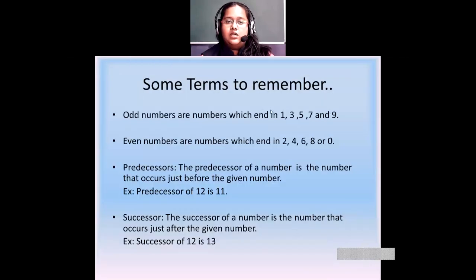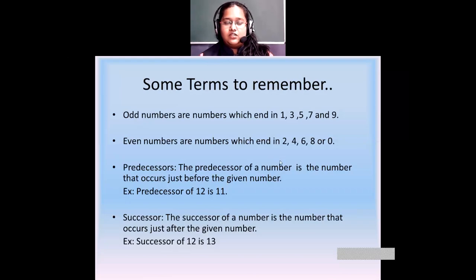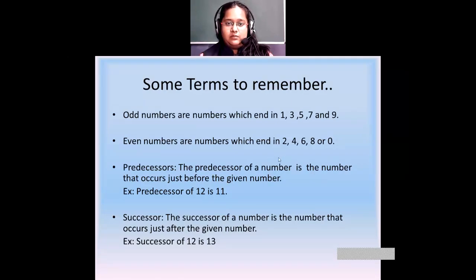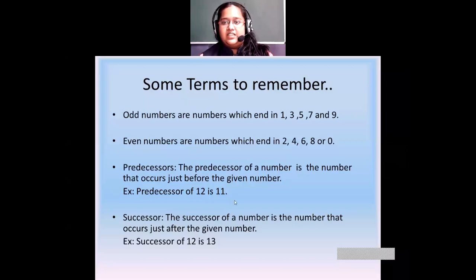Then we saw some terms. Odd numbers are numbers which end with 1, 3, 5, 7, or 9. Even numbers are numbers which end in 2, 4, 6, 8, or 0. Examples of odd numbers are 13, 27, 79, 57, and 21. Even numbers include 12, 24, 36, 58, 70, and 100.